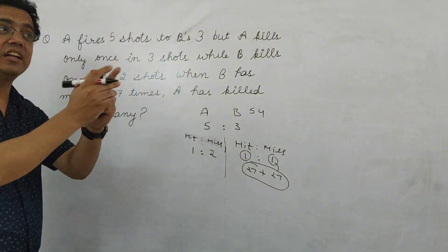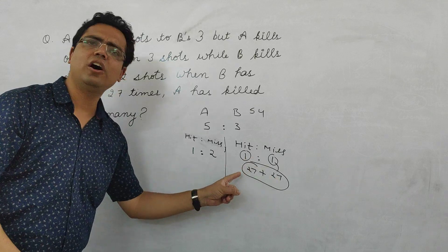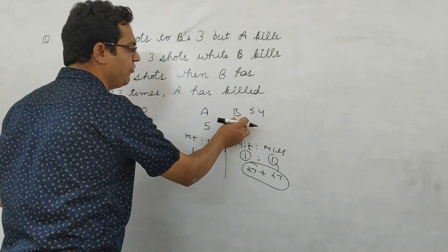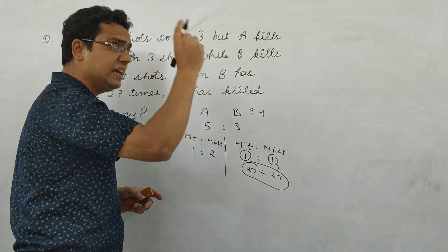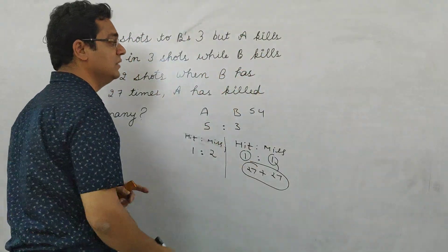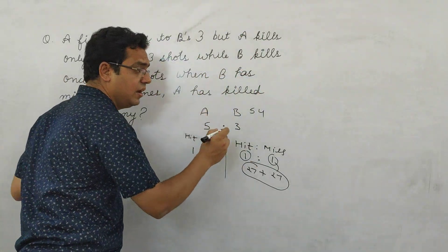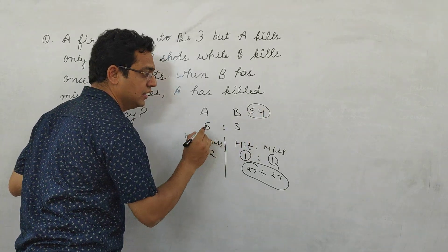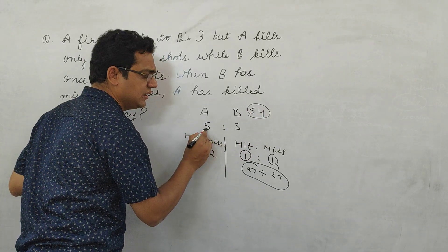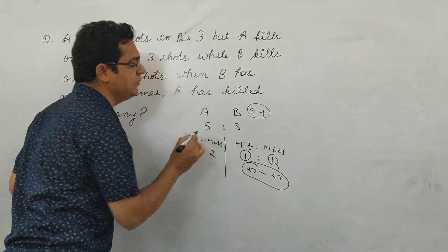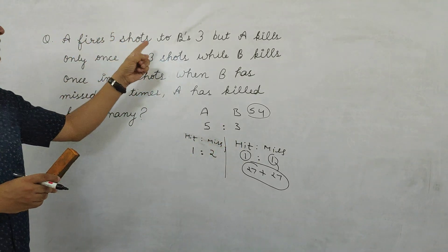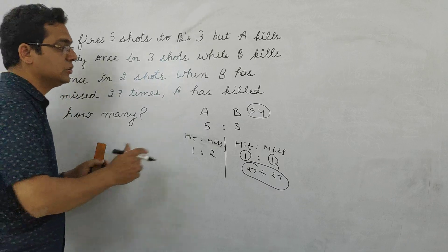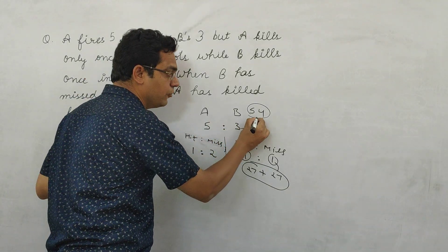So B fired 54 times in total — 27 hits and 27 misses. B kills once in 2 shots, so 54 total shots confirms this. B fired 54 times.